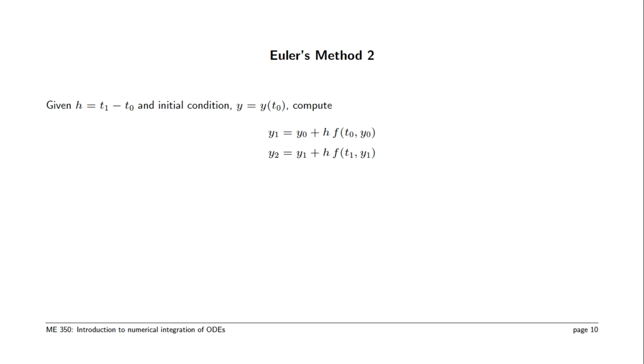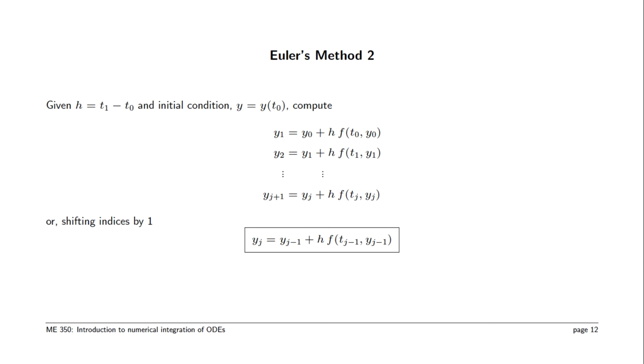Given the value of y_1, we can use it in our f(t, y) function to predict the slope at y_1 and advance our solution to y_2. And we repeat this an arbitrary number of times with j being an index of the time step. Now we're going to shift the time step index by 1. It doesn't matter as long as we keep the relative positions of y_j, y_(j-1), and y_(j+1) in mind. So the box here gives us the formula for Euler's method. The right-hand side is considered to be known at any time step.